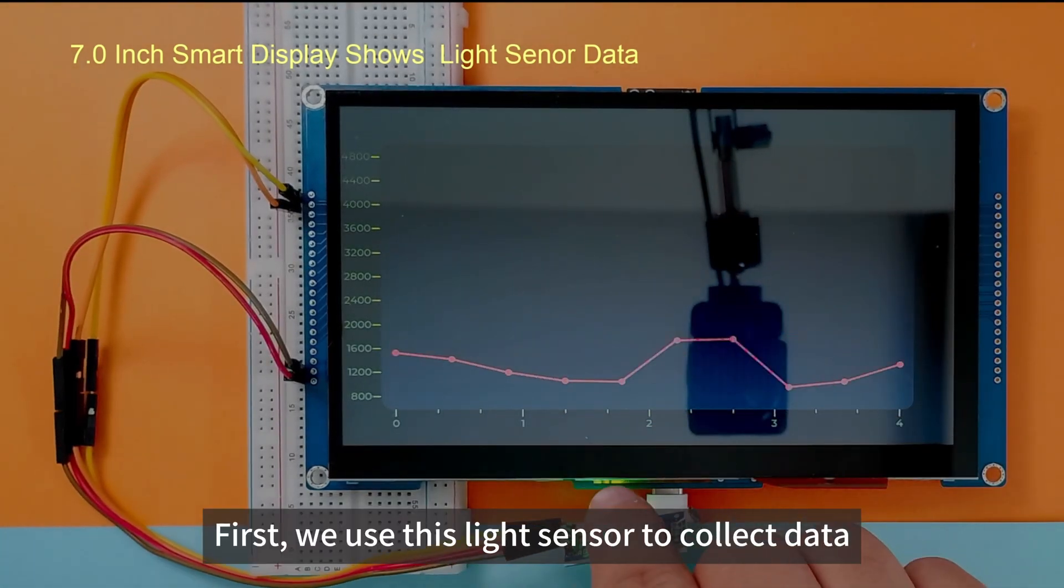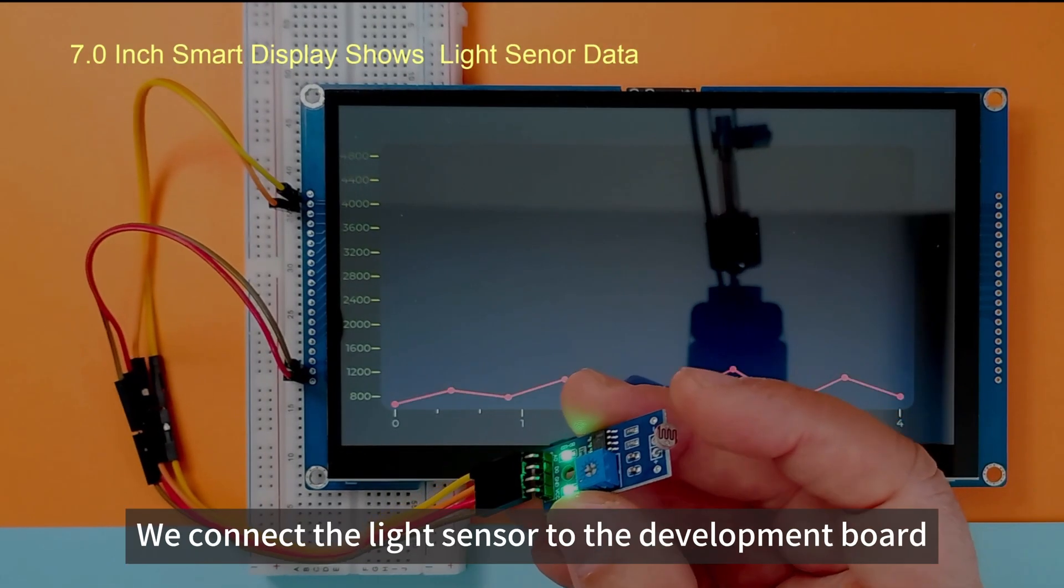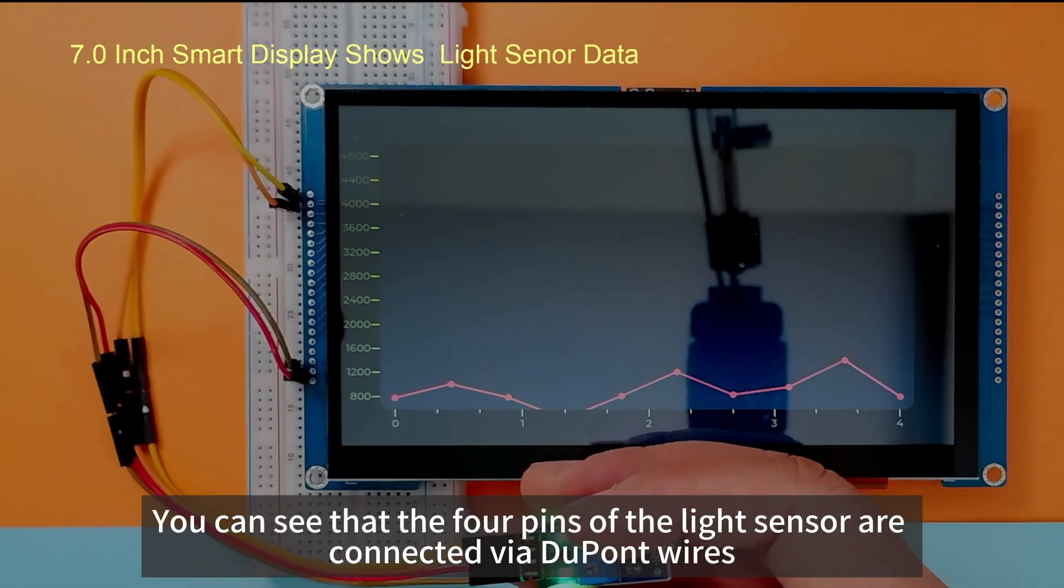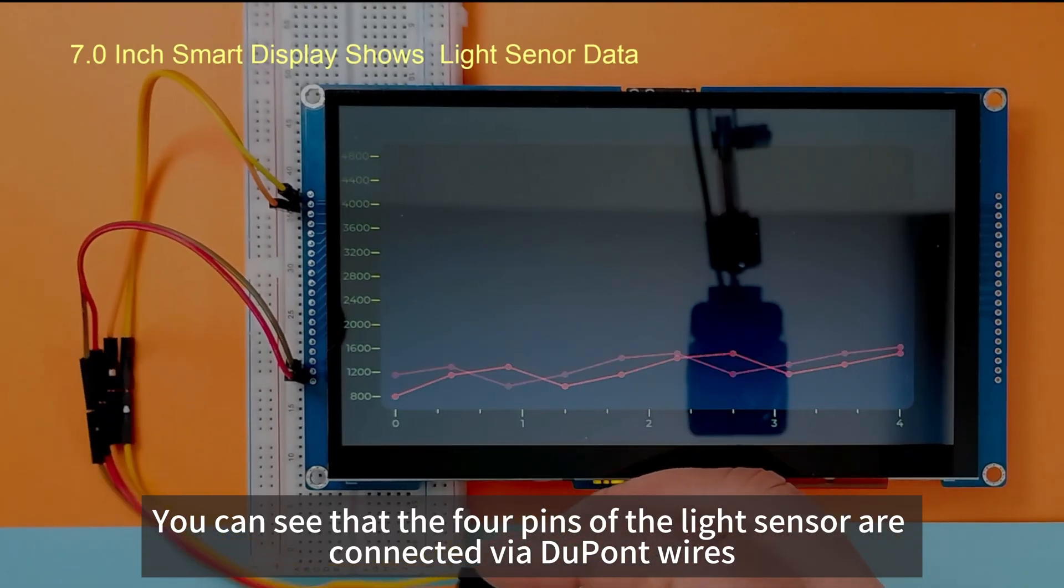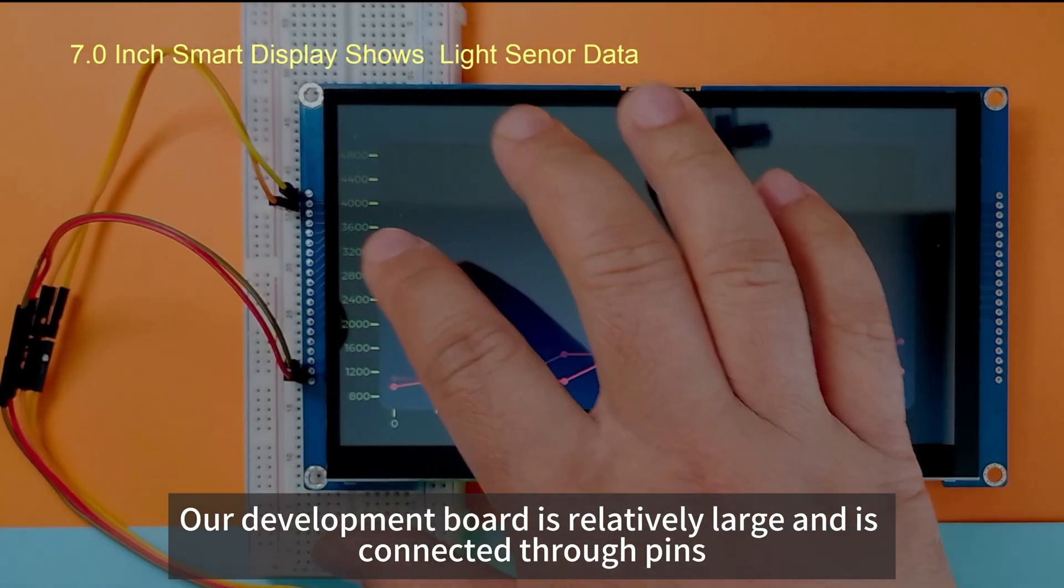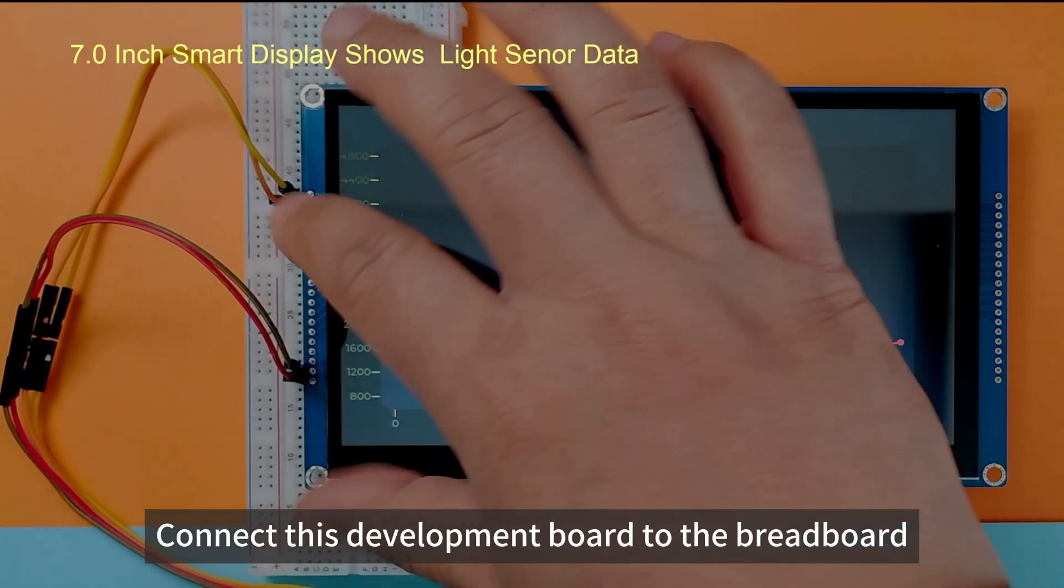First, we use this light sensor to collect data. We connect the light sensor to the development board. You can see that the four pins of the light sensor are connected via DuPont wires. Our development board is relatively large and is connected through pins. Connect this development board to the breadboard.